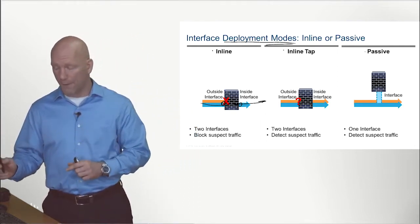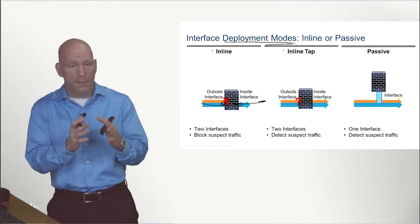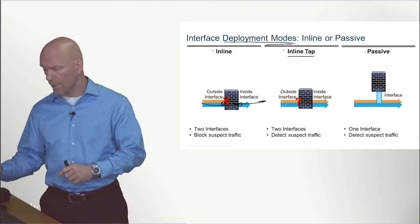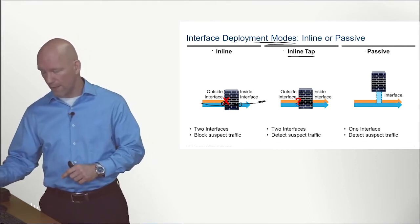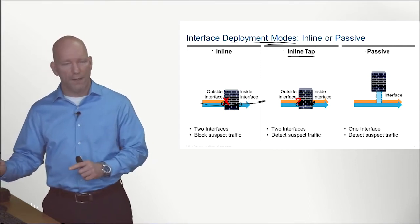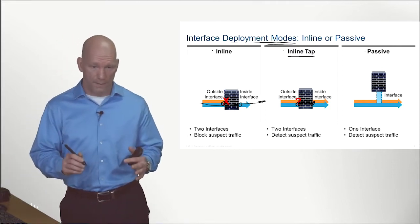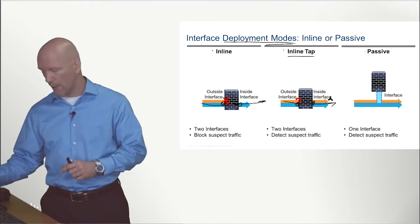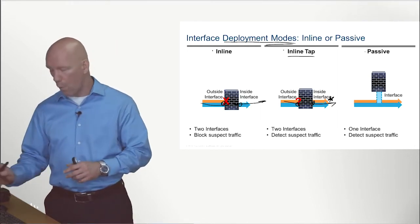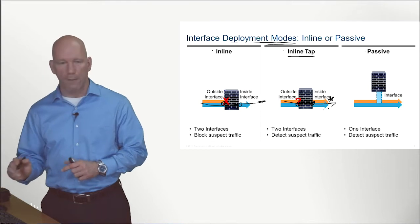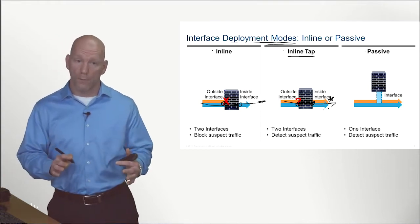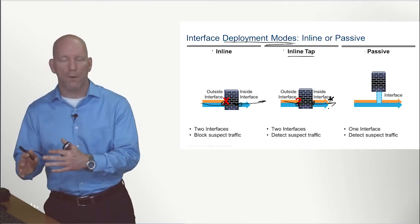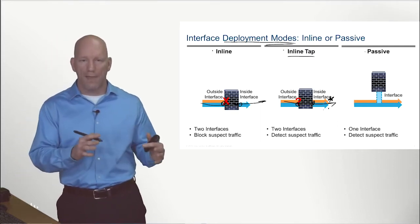The good thing about inline mode is all the data is being processed in real time. We can also go with inline tap mode, which still uses two interfaces but works with a copy of the data. While the data is still being forwarded, the security policy is still being applied and we're analyzing the traffic in the same manner, but we are working with a copy of that data.